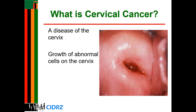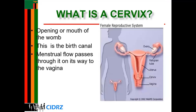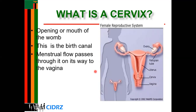A cervix is just an opening to the womb or the uterus. Looking at the diagram, you can see the cervix here and then the uterus inside. When the cervix is cancerous, this person is said to have cervical cancer. In other words, this is the birth canal, or where menstrual flow passes through on its way to the vagina.